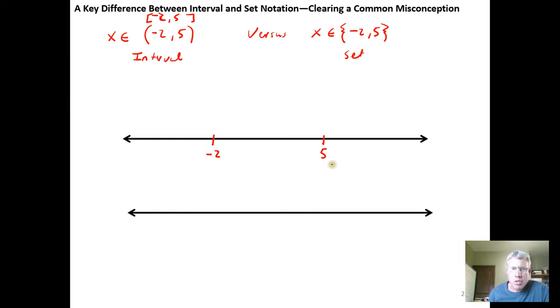So negative 2 and 5 form a boundary for an interval, or a kind of line segment. I put an open circle at negative 2, I put an open circle at 5, and then the interval notation says x is a number that lives somewhere between these two.